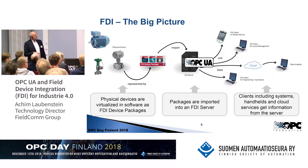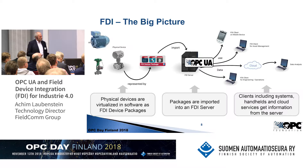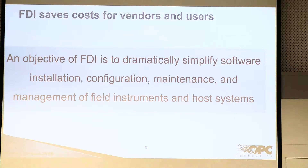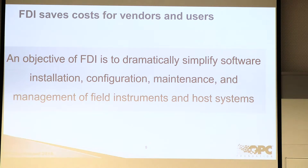There are two different kinds of clients: FDI clients and generic OPC UA clients. Both can access the information model provided on the OPC UA server. The objective of FDI is to simplify software installation, configuration, and maintenance of field instruments — saving costs for the device vendor and end user because there is only one integration technology — and the second part is to provide data through OPC UA.